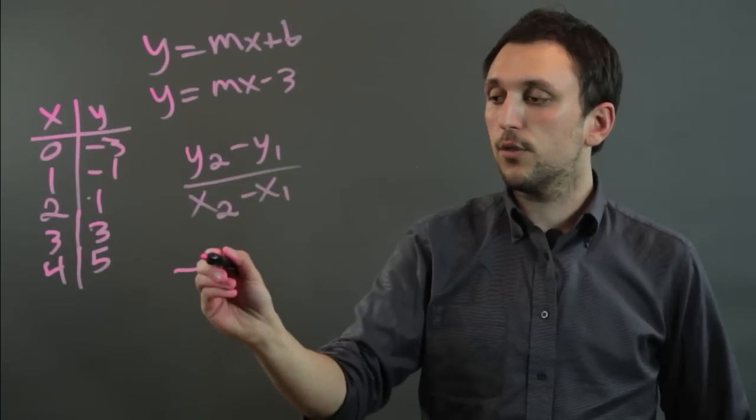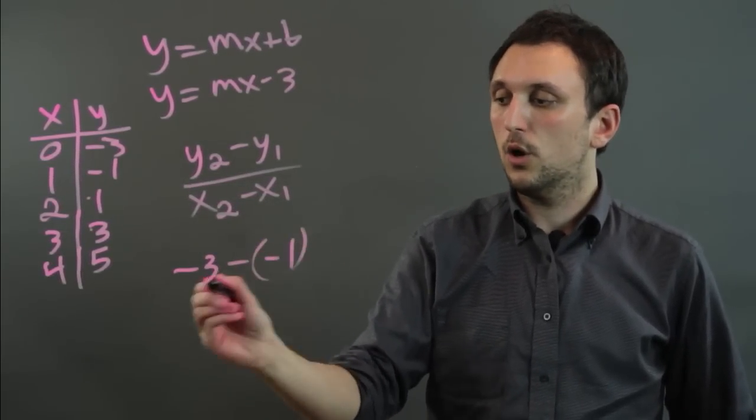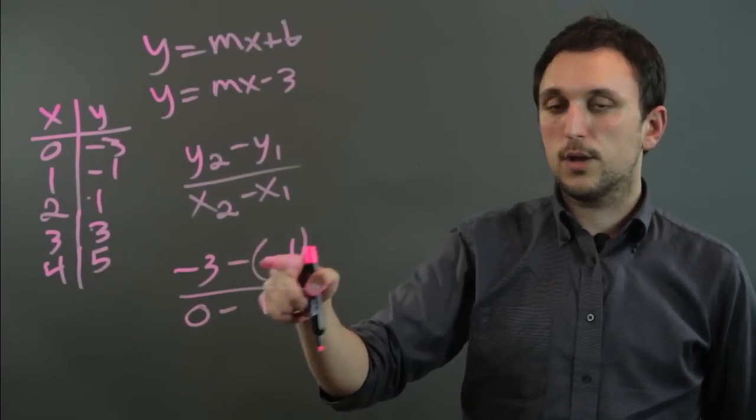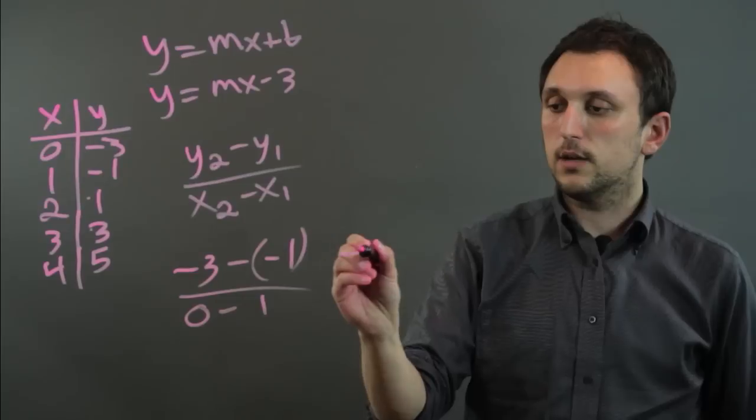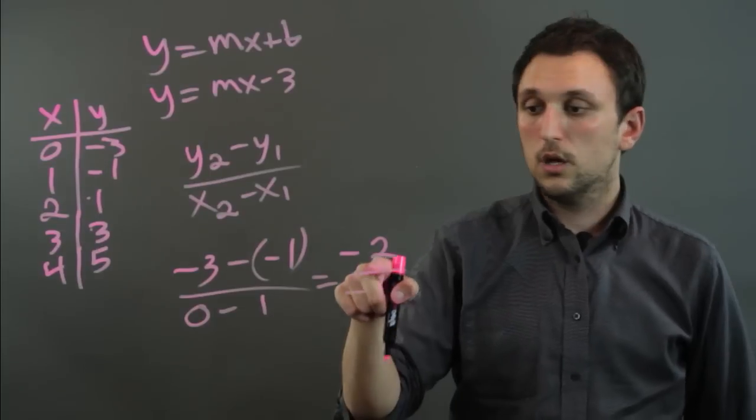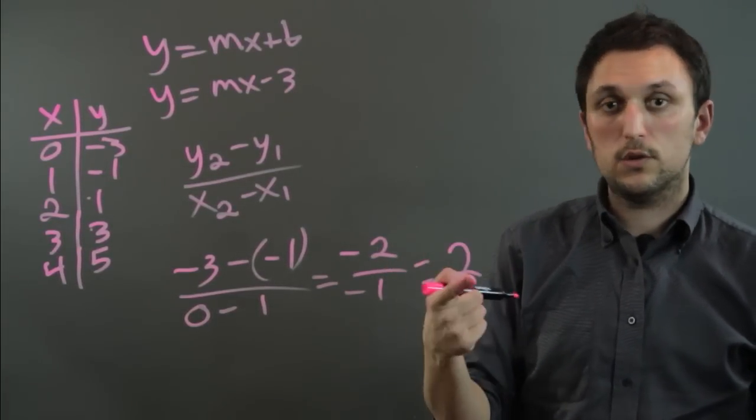So we say negative 3 minus negative 1 over 0 minus 1. And negative 3 minus negative 1 is negative 2. And 0 minus 1 is negative 1. So negative 2 over negative 1 equals positive 2.